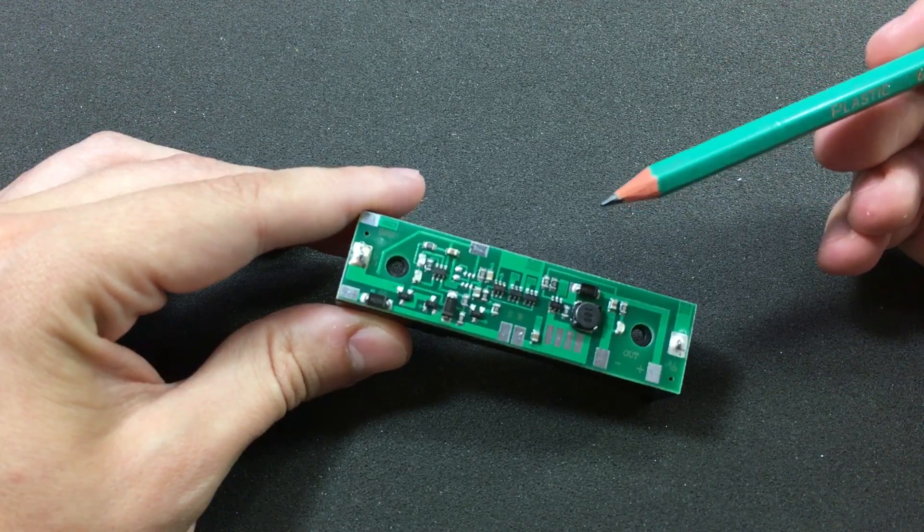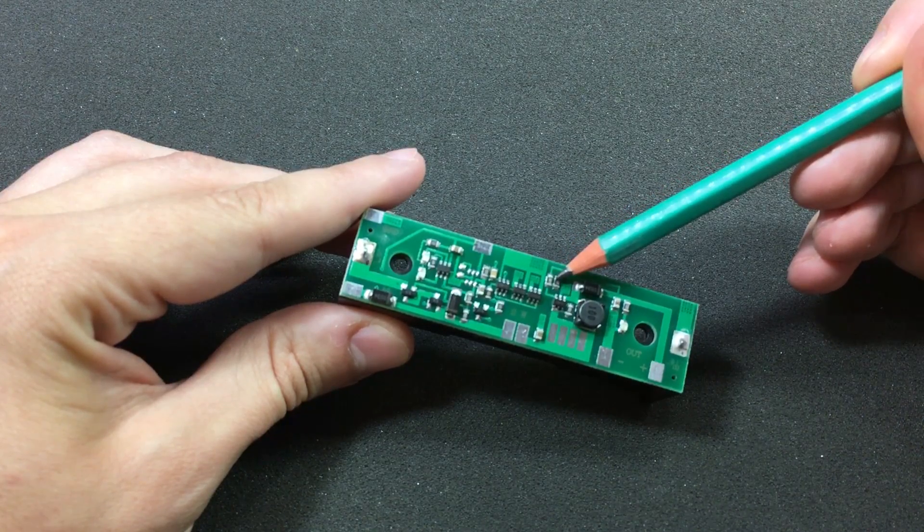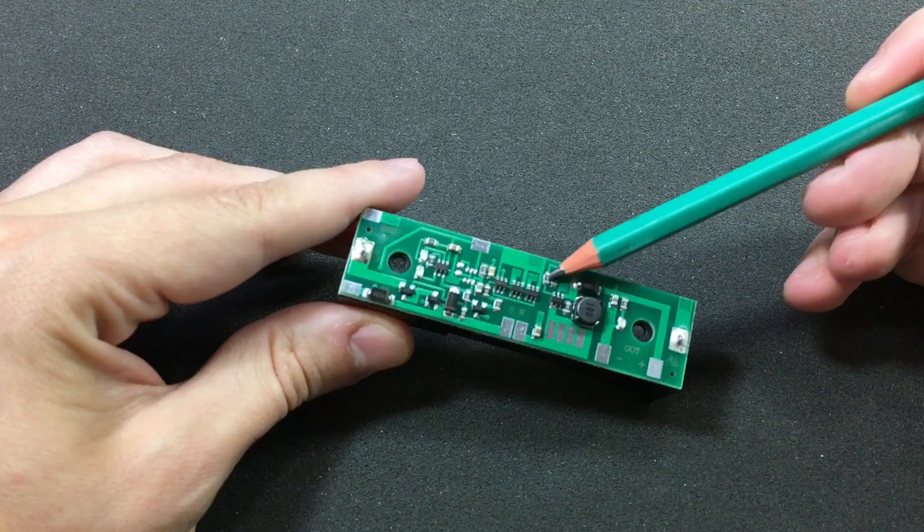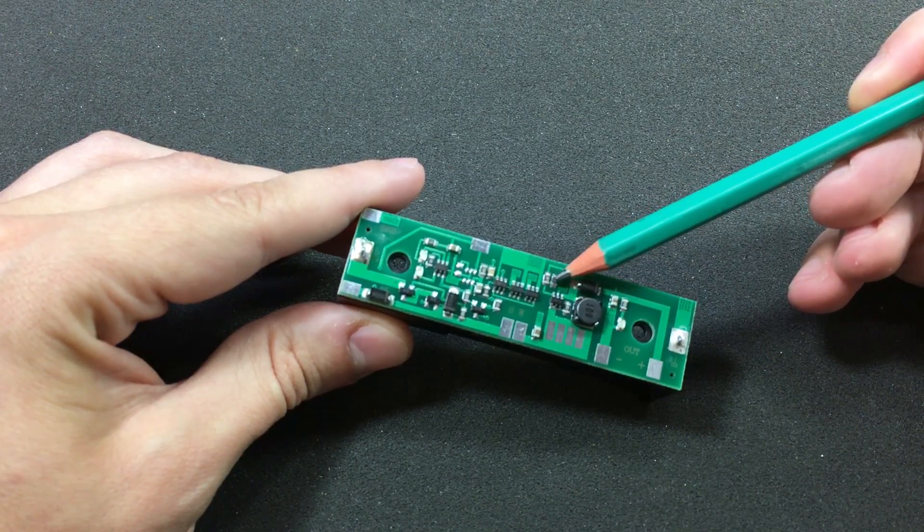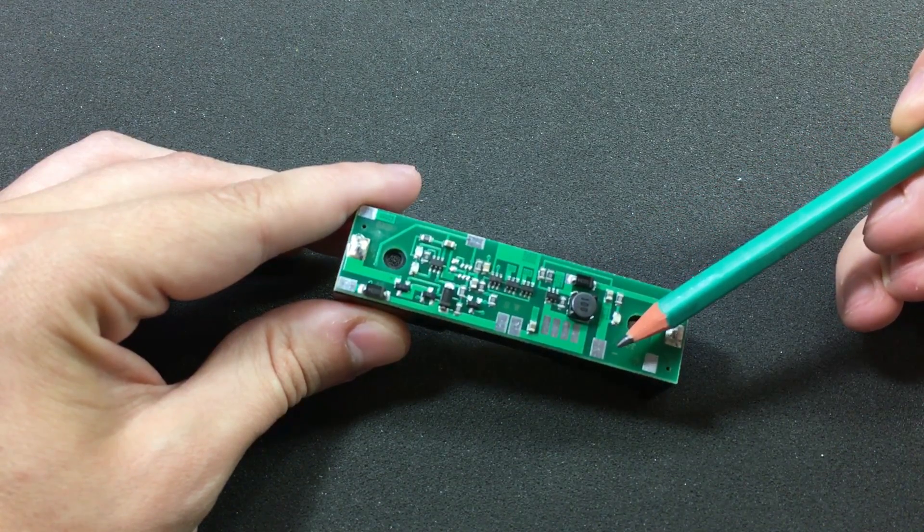For those wanting a different output voltage, they could probably play with the values of these resistors by using the formula given in the datasheet and adjust for a different output voltage. But you have to be careful—the value of the inductor might need to be adjusted as well.